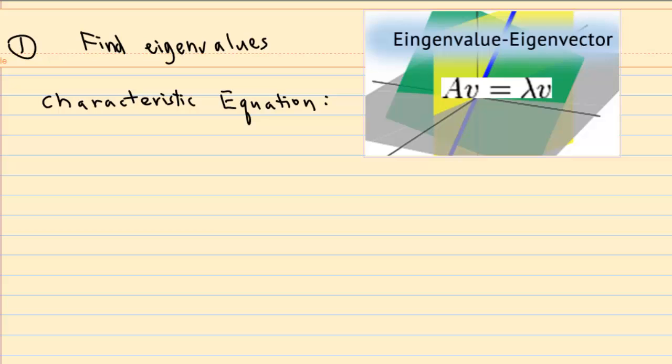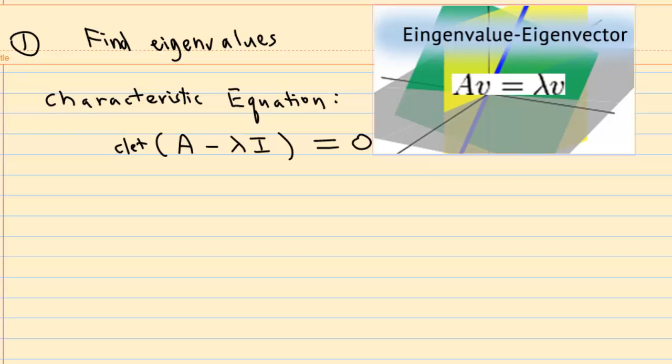First, to find the eigenvalue, we must solve the characteristic equation, which is the determinant of A minus lambda I equal to 0.